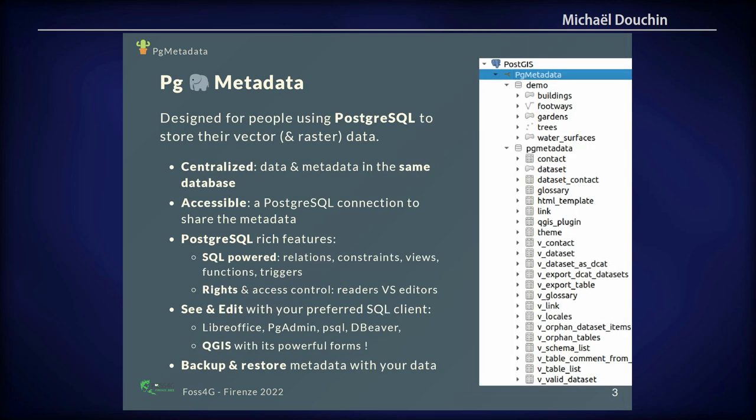PG metadata was designed for people using PostgreSQL to store vector and raster data. Why? Because we think PostgreSQL is a great tool and you have your data centralized in the same place. So if you have the metadata with your data, that's great. It's very accessible — you only need a PostgreSQL connection to access your metadata, not a third-party tool.